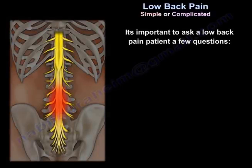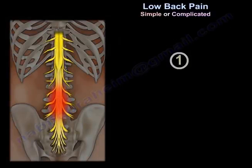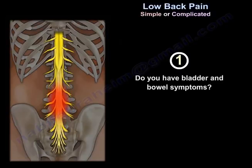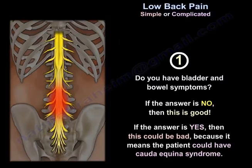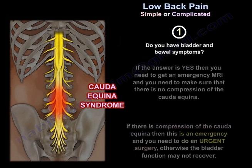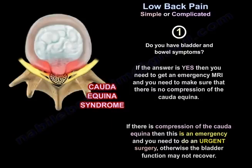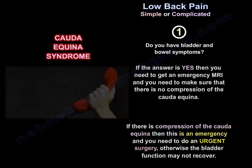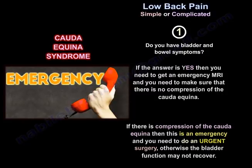It's important to ask a low back pain patient a few questions. First: do you have bladder and bowel symptoms? If the answer is no, that's good. If yes, this could be bad, because it means the patient could have cauda equina syndrome. You need to get an emergency MRI and ensure there's no compression of the cauda equina — if there is, that's an emergency requiring urgent surgery, otherwise the bladder may not recover.